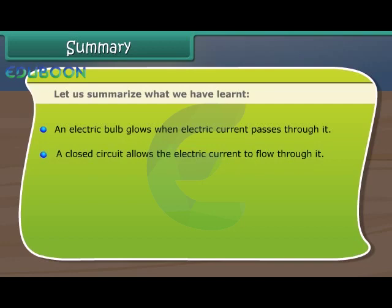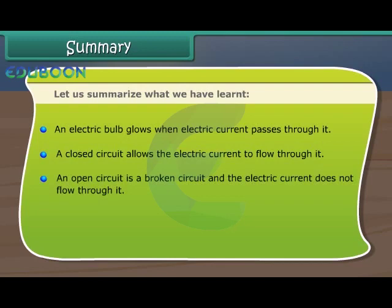A closed circuit allows the electric current to flow through it. An open circuit is a broken circuit and the electric current does not flow through it.